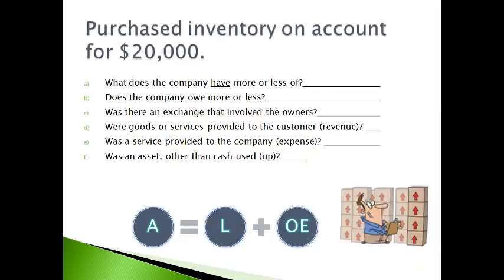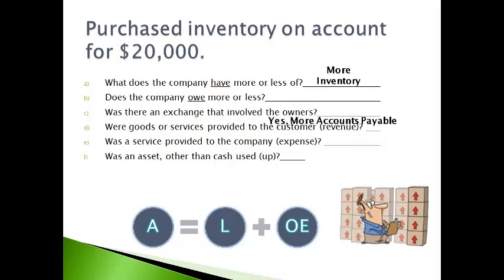The company purchased inventory on account. The company has more inventory and did not pay, so they owe for the inventory. The liability is reported as accounts payable. There was no exchange with owners or with customers. A service was not received by the company, and no assets were used up. The balance sheet reports more inventory and more accounts payable.